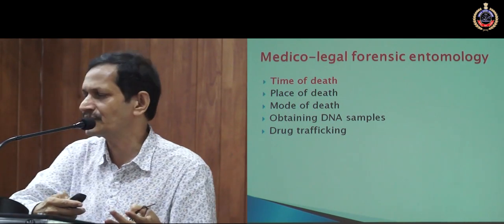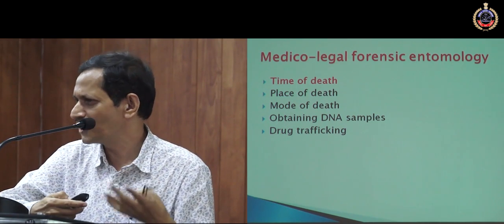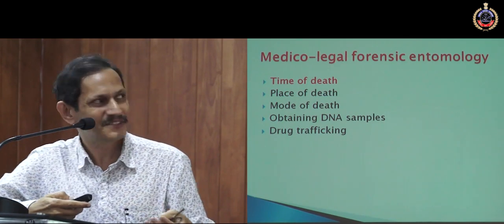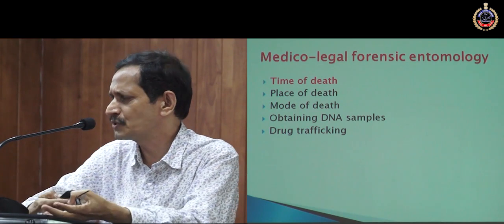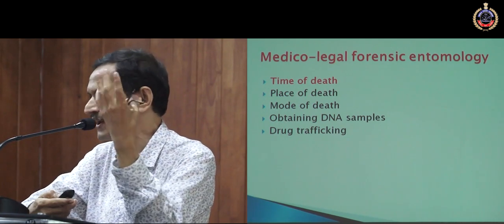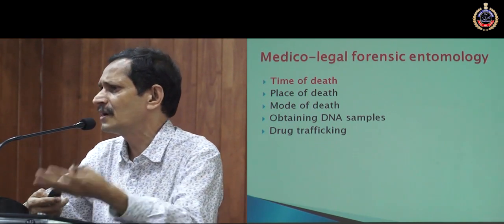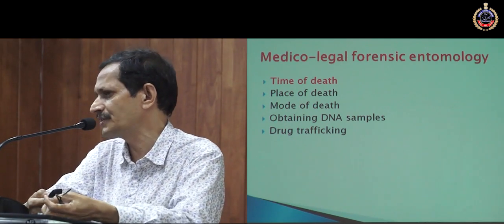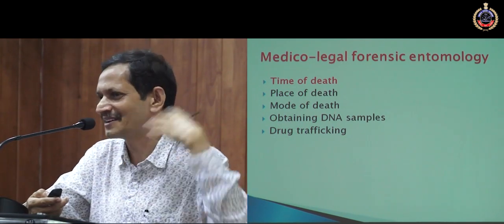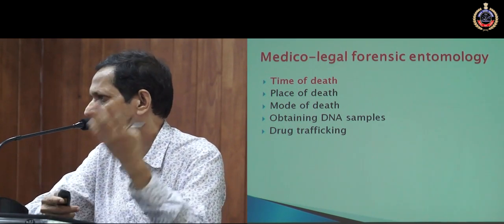The areas in which we can apply forensic entomology: number one is time of death, which is very important. Then place of death — it may not always be possible. Mode of death — how the murder was committed. It can also be used to get DNA samples, maybe from blood-feeding insects. And even for drug trafficking — you can get an idea about the origin of contraband like cannabis, from which country it originated and through which countries it traveled, based on the insect species.